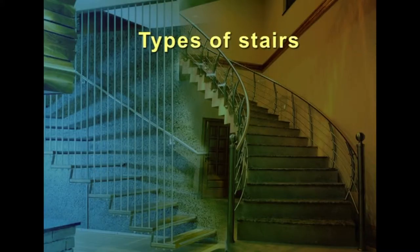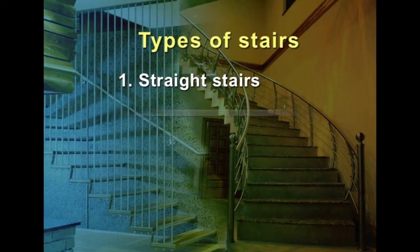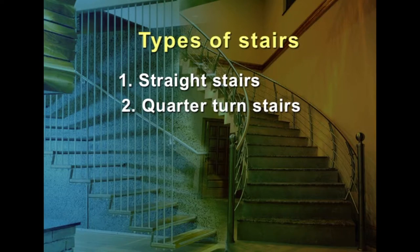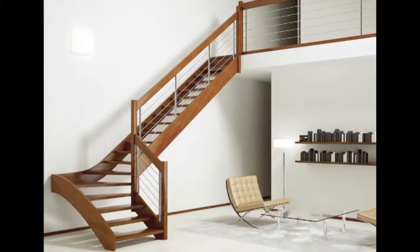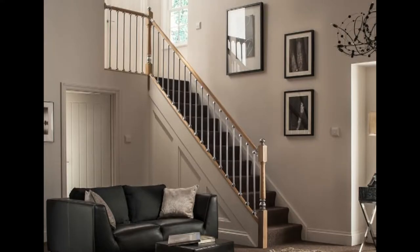Types of stairs: straight stairs are stairs along which there is no change in direction on any flight between two successive floors. Quarter-turn stairs are provided when the direction of flight is to be changed by 90 degrees. The change in direction can be effected by either introducing a quarter-space landing or by providing winders at the junction.